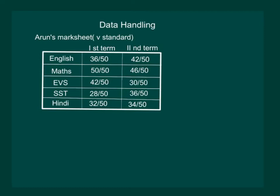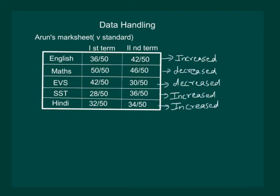From this table, we can see that in first term, Arun scored 36 out of 50, while in the second term he scored 42 out of 50. That means his marks has increased and he has made an improvement in English subject. Similarly, we can compare marks of first term and second term for all the subjects and find out whether they have increased or decreased. And now we are in a position to make an inference. We can conclude that Arun needs to work harder for maths and EVS.